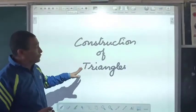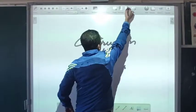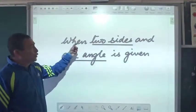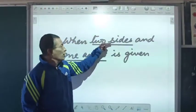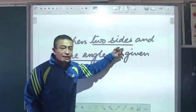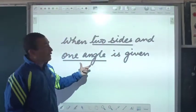So continuing with construction of triangles, we are moving on to the second type when two sides and one angle is given. Here you can clearly see that two sides are given and one of the angles are given.